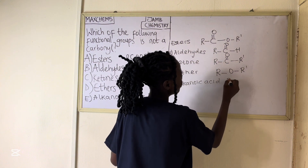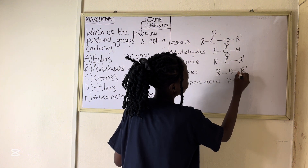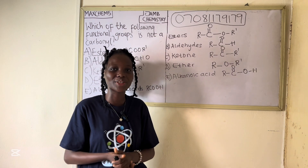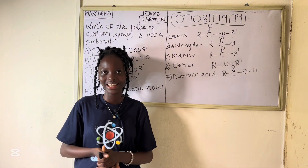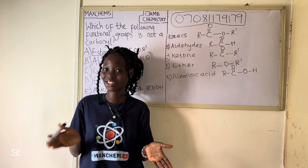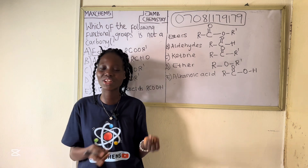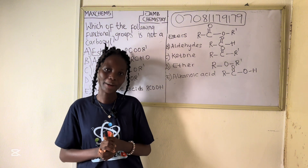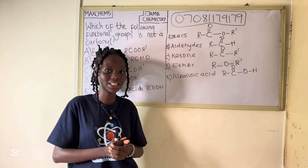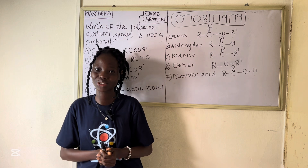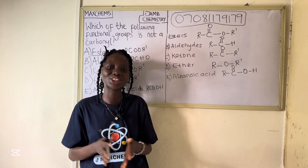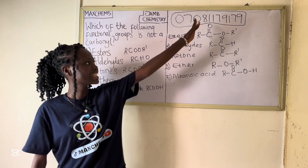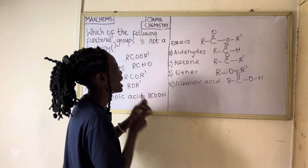You can still get 300 plus in your JAMB exam. If you are ready to learn, Max with Us is hosting an intensive JAMB class for science students covering subjects like biology, chemistry, physics, and use of English. The tutorial fee is 4,000 naira for four subjects per month — 1,000 naira for one subject, 2,000 naira for two subjects, 3,000 naira for three subjects per month. If you want to join, click the link in the description box if watching on YouTube, or send a message to the number shown if watching on TikTok.